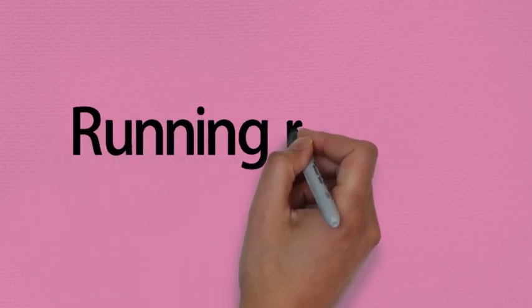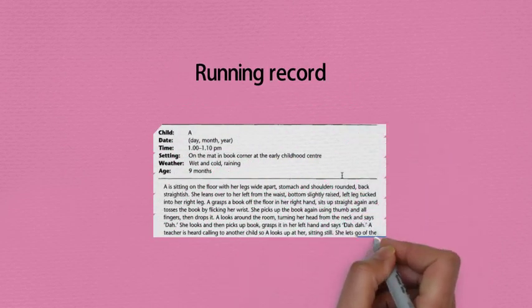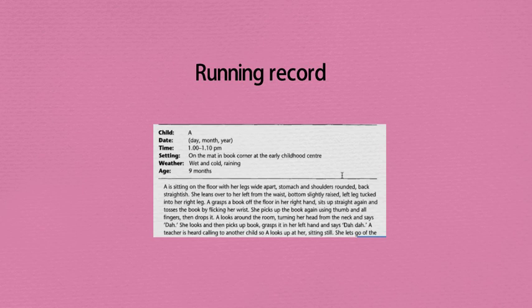The next technique is called a running record. This is a much more detailed form of recording. I've only given you a short excerpt here, but it's much more detailed. You record every little detail—you set the scene with the date, the children, the time, the weather (that's important), their ages or age if it's an individual child, and you would record in absolute detail. This one you would not do over such a long period of time. Here you see it's been over 10 minutes, and that will be plenty for a running record.